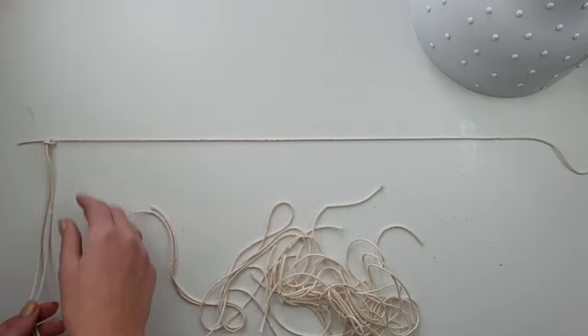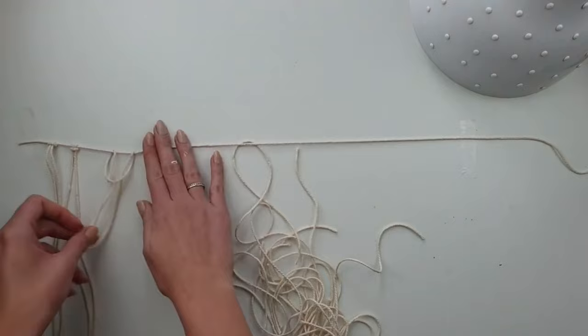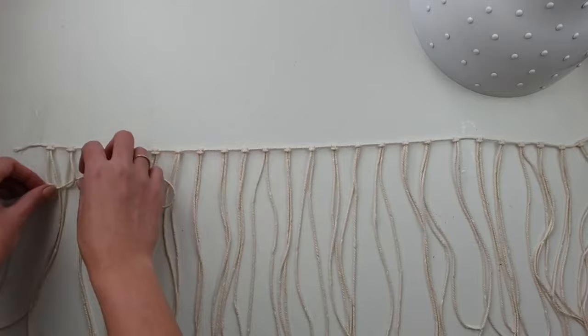I cut 50 cm long pieces of cord and attach them to my longer piece by creating lark's head knots. I place the knots next to each other with about 2 cm gap between each one.